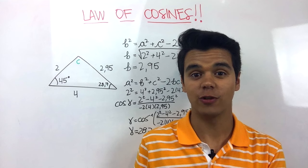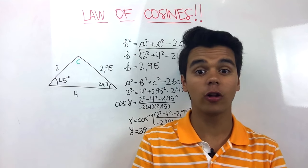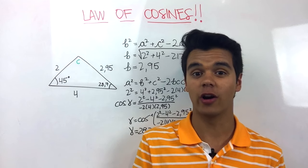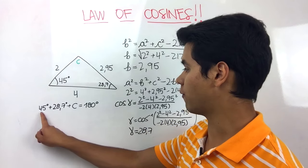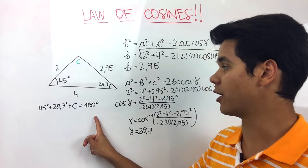Finally, to find C, we just use the property of all triangles that says that the sum of all its internal angles is equal to 180 degrees. That being said, we know that 45 degrees plus 28.7 plus C is equal to 180 degrees.